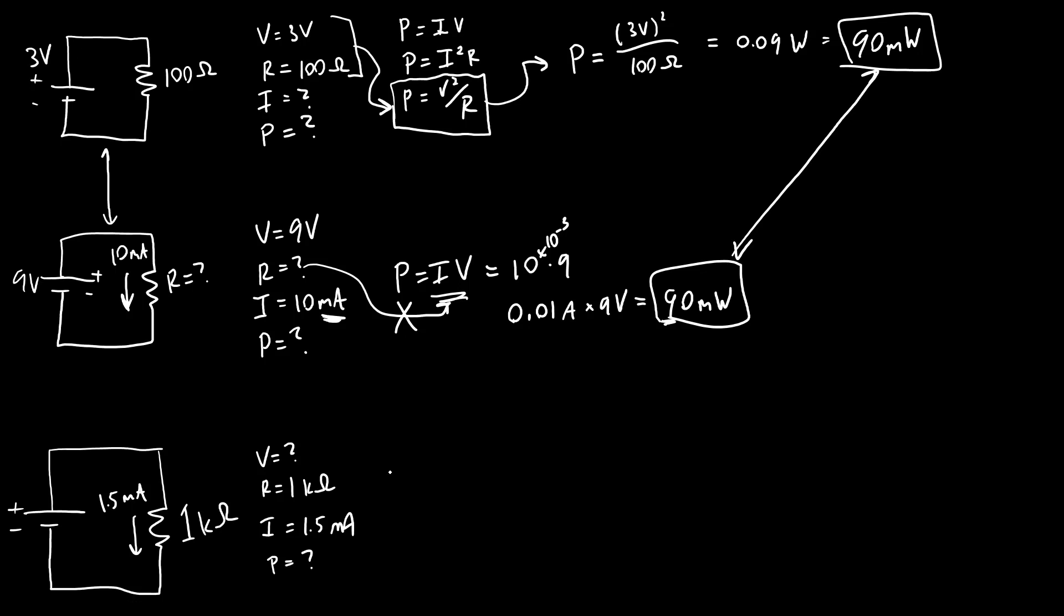In this case, you can use the form of the equation with resistance and current, P equals I squared R. Again, be careful with your units. That's 1.5 milliamps, so 1.5 times 10 to the negative third amps squared times the resistance, which is one kilo ohm, or one times 10 to the third ohms. That is going to give me a power of 2.25 times 10 to the negative third watts, or 2.25 milliwatts.